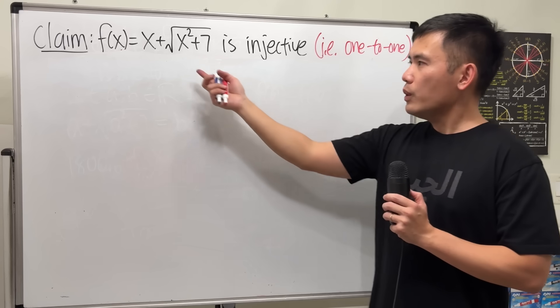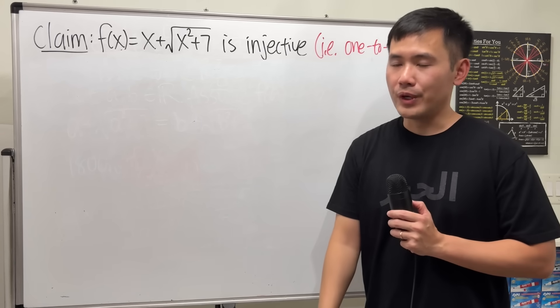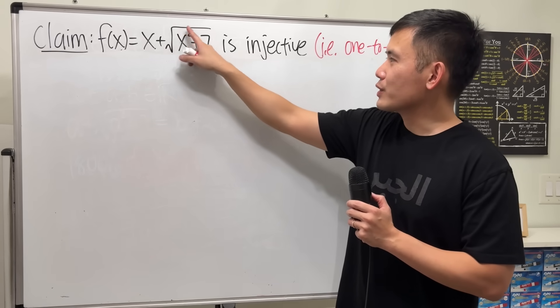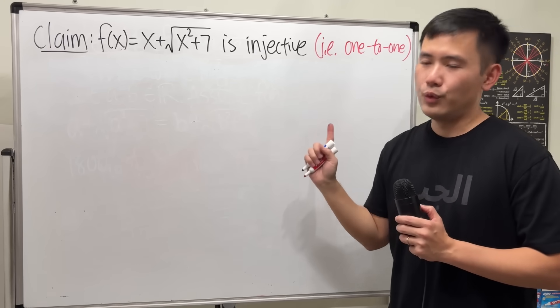At first, you might be wondering, how can this function be one-to-one? Because we have x squared, right? Well, I will tell you. Thanks to the square root, and also we have a plus x on the outside, it turns out it's indeed one-to-one.